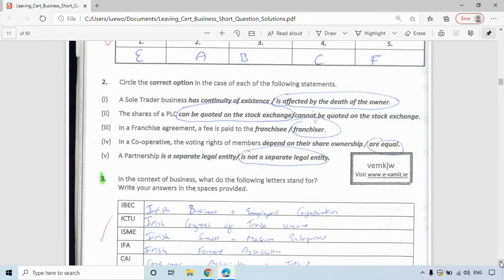Remember the person taking out the franchise is the franchisee. In a cooperative, the voting rights of members are all equal. So a credit union, for example, everyone has an equal say. And a partnership is not a separate legal entity.